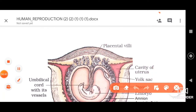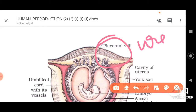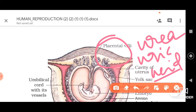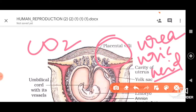Secondly, the placenta is also important for elimination and removal of nitrogenous waste — for example urea, and in small quantities uric acid, as well as carbon dioxide. These need to be transported from the fetal blood to the maternal blood and then eliminated. The placenta enables excretion of these highly toxic nitrogenous wastes.